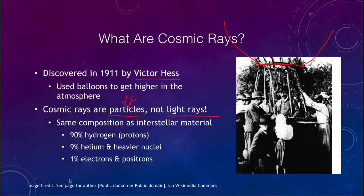Cosmic rays are essentially the same composition as the regular interstellar material or anything else that we look at in astronomy. They are about 90% hydrogen nuclei — protons — about 9% helium or heavier nuclei, and about 1% are electrons and positrons.